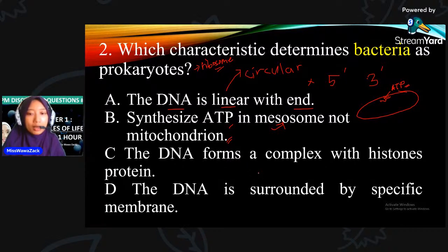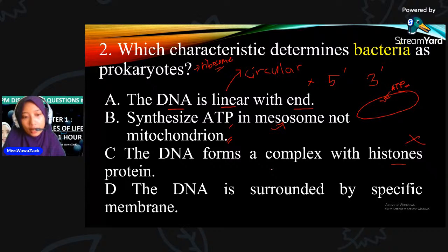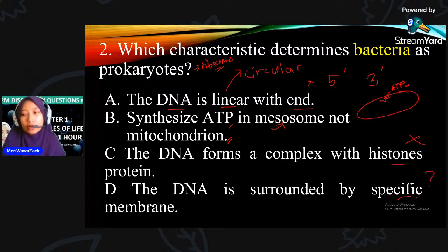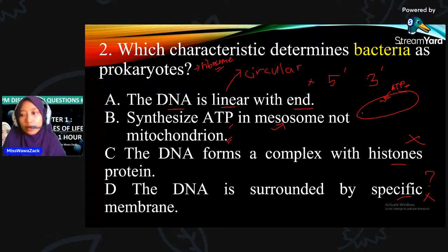Option C: the DNA forms a complex of histone protein - tak boleh, sebab histone protein hanya hadir dalam DNA of eukaryote. Option D: DNA is surrounded by specific membrane - tak pernah kita belajar. So jawapan dia adalah B.